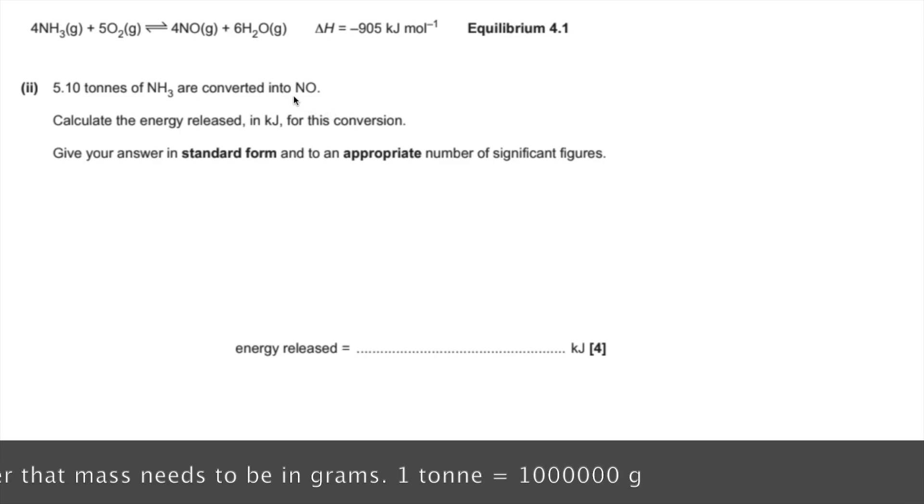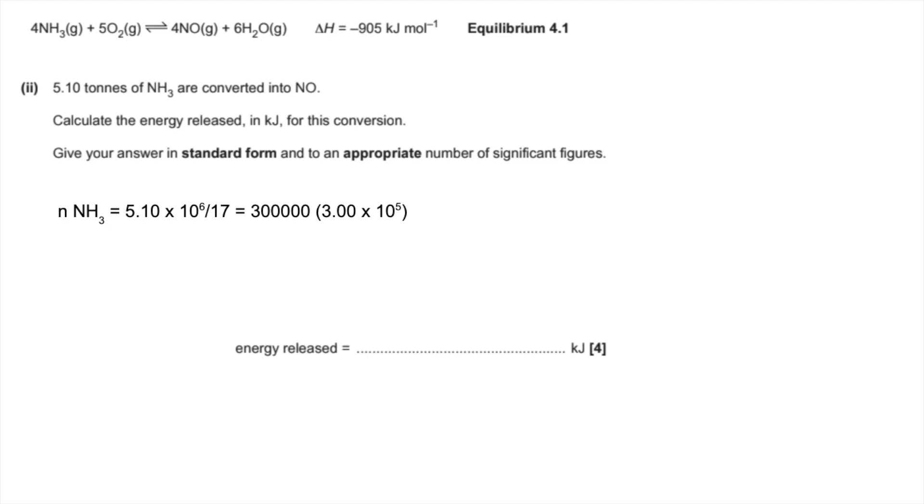The first thing I'm going to do is calculate the moles of ammonia—you should always do that if you're given the mass of a particular chemical. The moles of ammonia comes out at 300,000 or 3 times 10 to the 5. Next we're going to look at the equilibrium, and this information is telling us that when 4 moles of ammonia react...